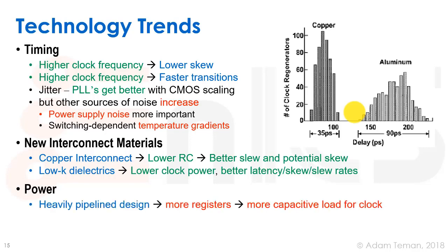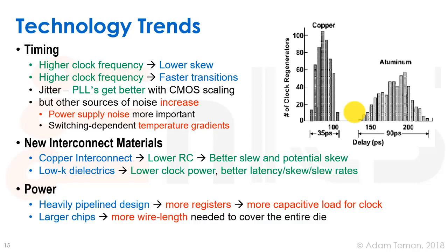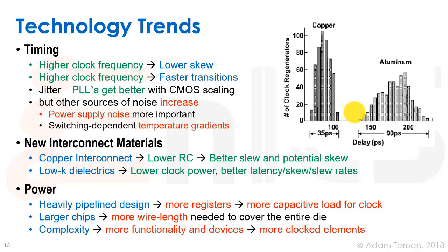When we go to heavily pipelined designs to get better throughput, we have more registers, which means more capacitive load for the clock. Larger chips mean more wire length needed to cover the whole die. Complexity means more functionality and more devices, so probably more clocked elements. Dynamic logic, which isn't used as much anymore, required essentially all elements to be clocked.